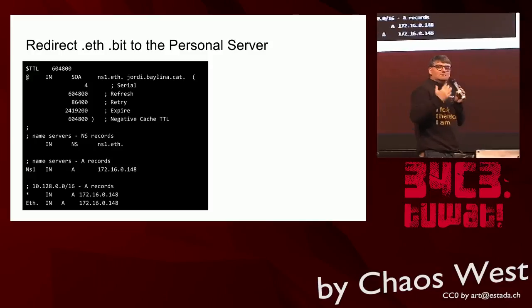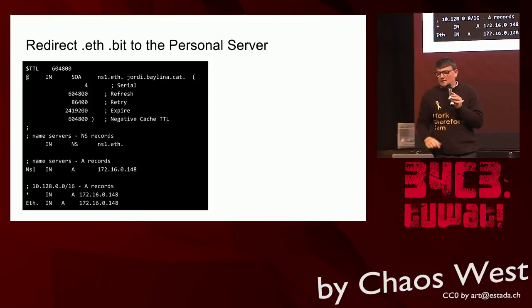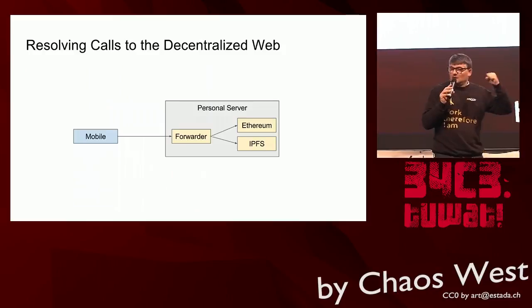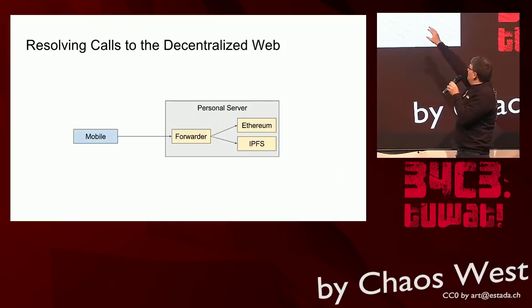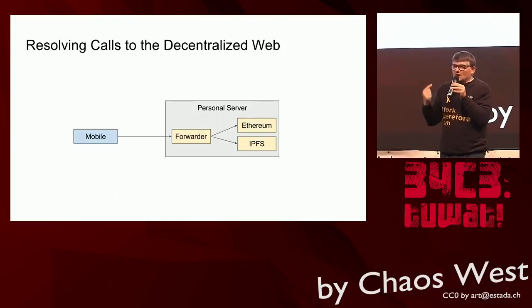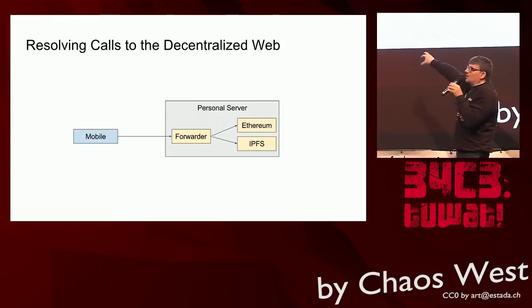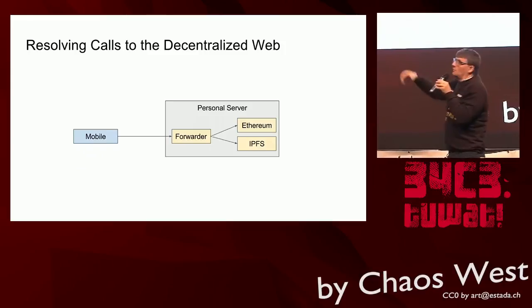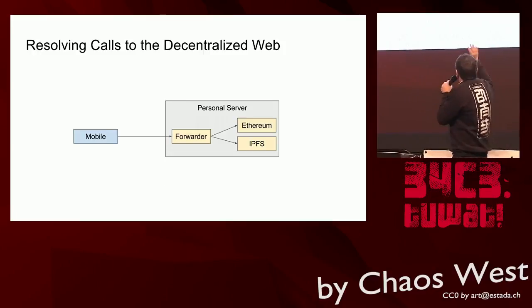When somebody asks for, say, bylena.f, it will ask my server to serve that page. We just need a simple forwarder that takes the HTTP GET query, goes to Ethereum — since we have an Ethereum node on the same server — checks which IPFS hash is extracted from ENS, then gets that hash from IPFS and forwards it to the customer. This looks very difficult, but at the end it's not more than 10 lines of code.